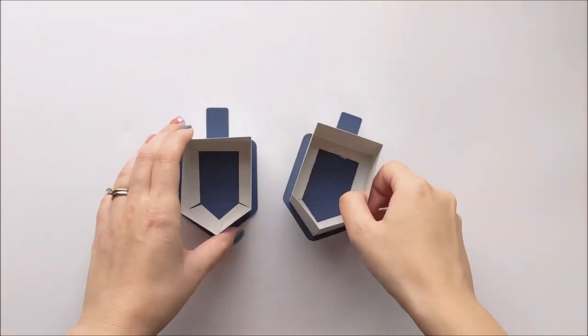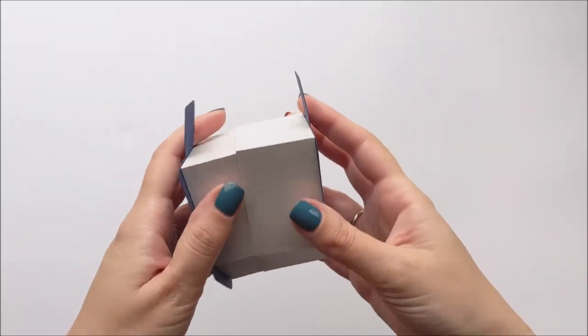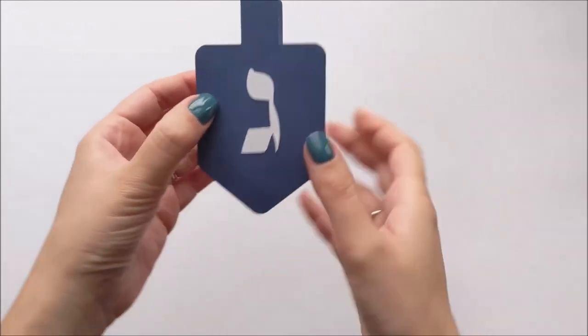Once the glue is dry, you can fill your box and then nest the two halves together. And there you go.